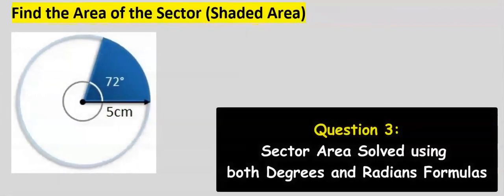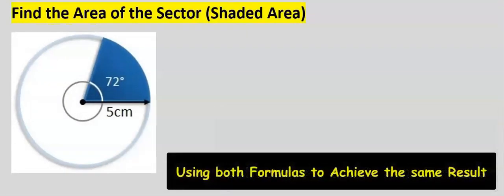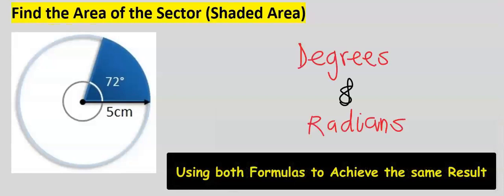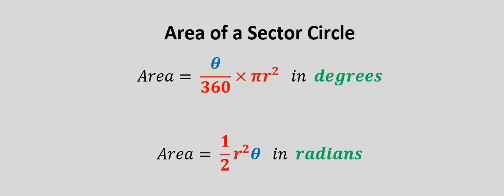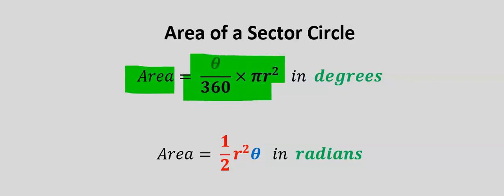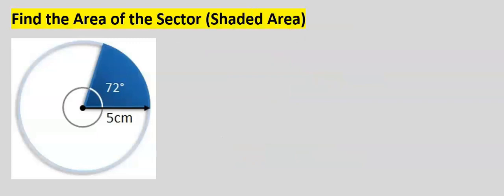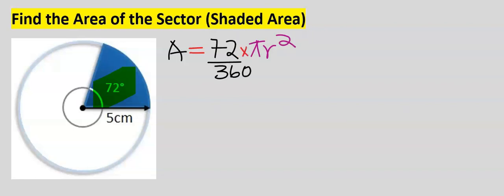Next, let's find the area of this sector. I'm going to solve this problem using both the degrees formula and the radians formula to see if we get the same answer. Let's start with degrees. The area of the sector is the area of the circle multiplied by the given angle divided by 360.